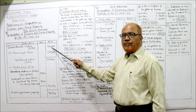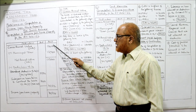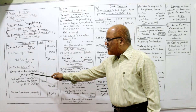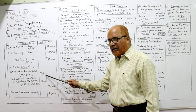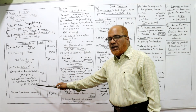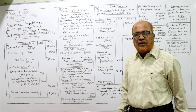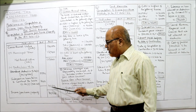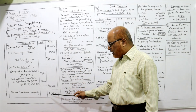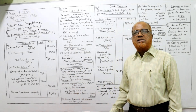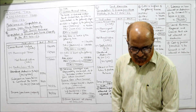From GAV, deduct local taxes (municipal taxes) of ₹12,960 to get Net Annual Value. Then standard deduction of 30% of NAV = 30% of ₹1,13,040 = ₹33,912. Interest on loan taken to construct the house: ₹9,600 given, but deduct penal interest of ₹1,000, so ₹8,600 is allowed. Total deductions = ₹42,512. Income from house property = ₹1,13,040 minus ₹42,512 = ₹70,528. That's the end of problem number 3.